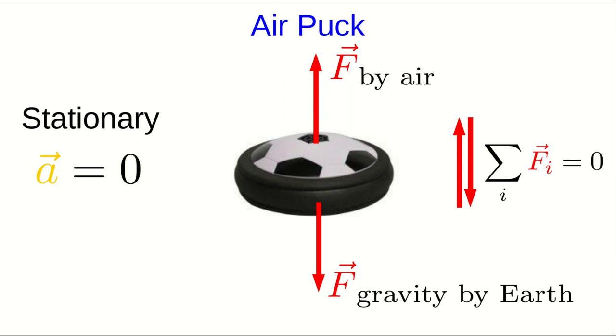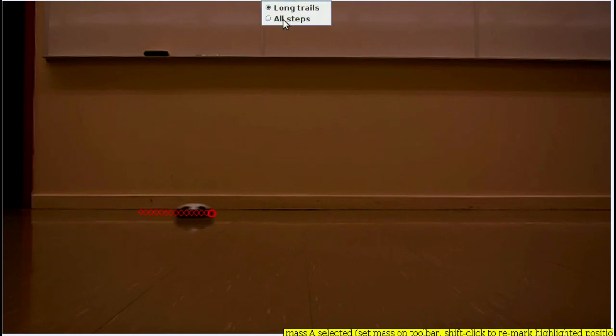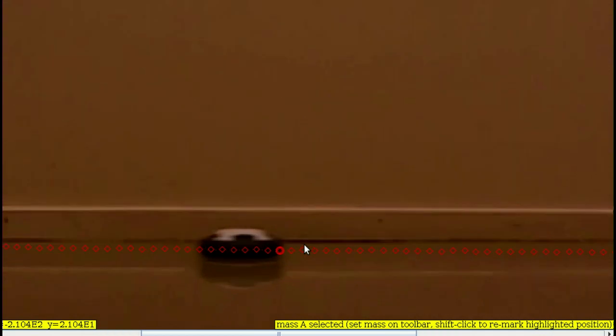But now suppose the air puck isn't stationary. Suppose I take the air puck and I give it a little shove. Then what we find, if we look at it, is that after it leaves my hand, it moves at a constant velocity. Let's actually see that. So here we see the puck, and you can see the motion diagram track being produced there, and that is clearly constant velocity motion. I'll put in the whole motion diagram, and I will zoom in, and it becomes even clearer that this is constant velocity motion.